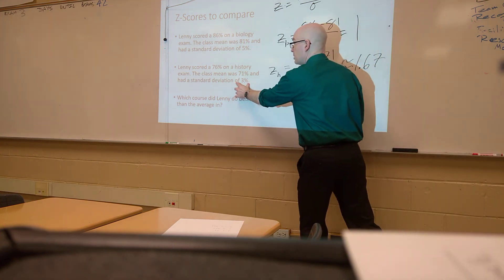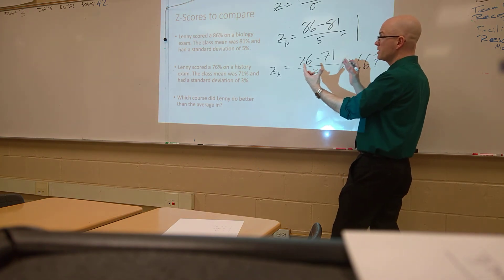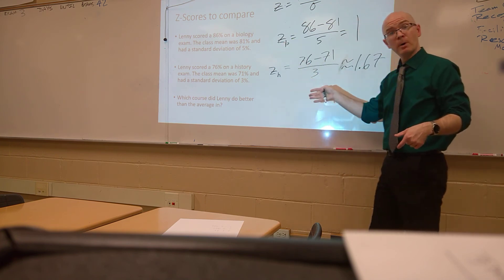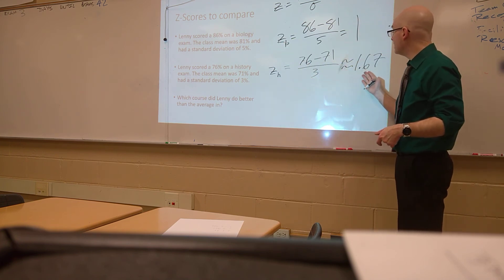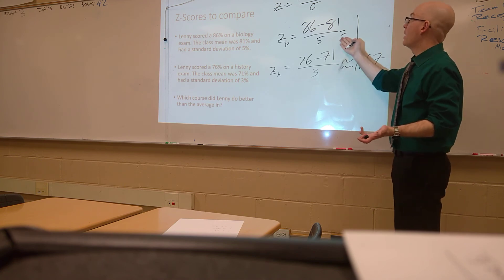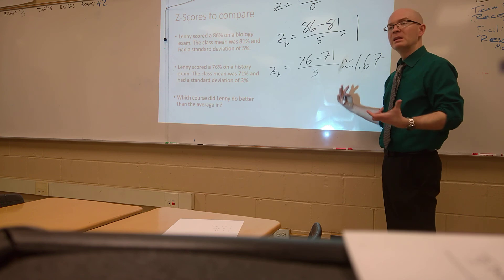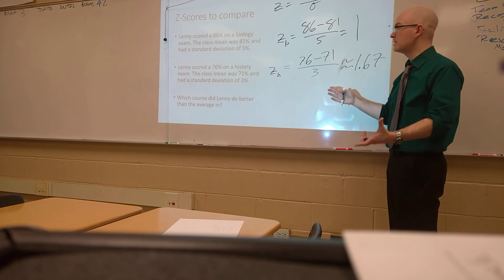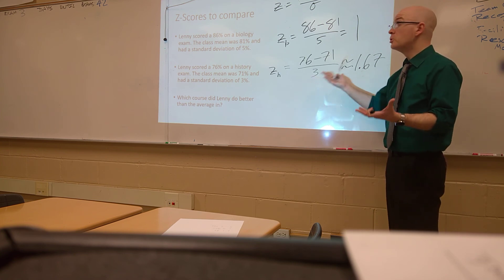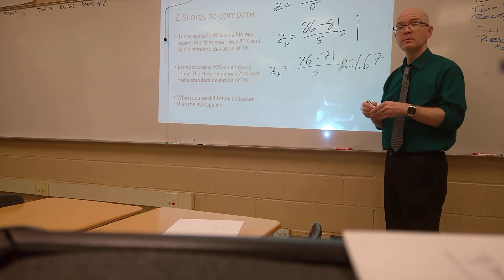The smaller standard deviation here means that the data is a little bit more scrunched together. It's more closely distributed to the mean. So although the percentage might be the same in both, we can see that Lenny actually did better than the class average, fairly significantly, compared to how he did to the average in biology. So it gives us another lens to look at this, and rather than just say he did 5% better in both, if we know the standard deviation, we can say he did almost two standard deviations better, one and two-thirds, which is close.